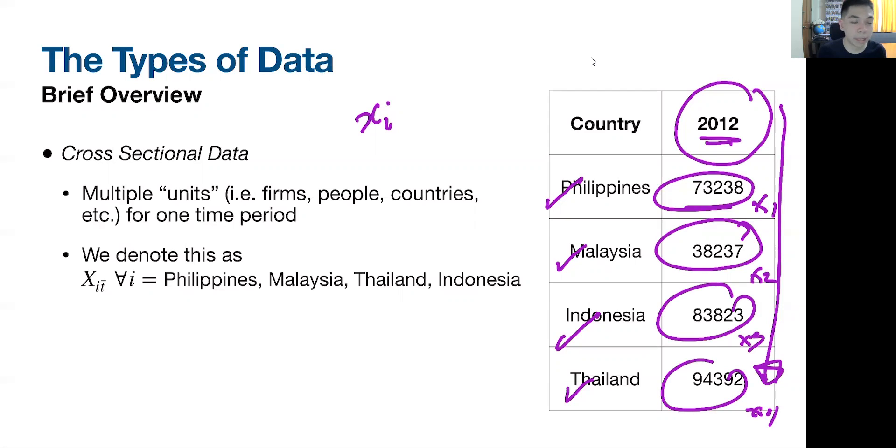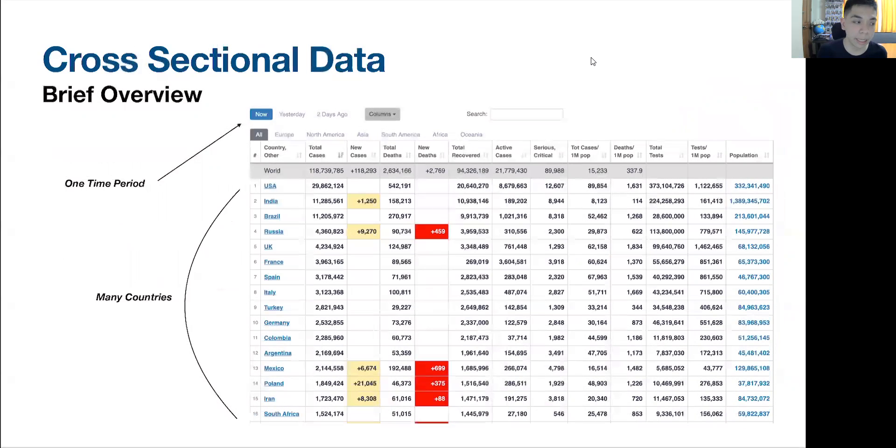Other textbooks may denote this as x, i, t, wherein the t is fixed, so the time dimension is relatively fixed. This is an example of a cross-sectional data set.